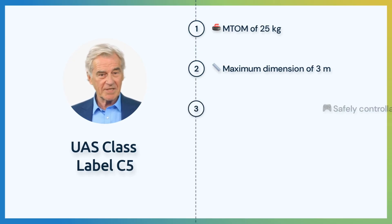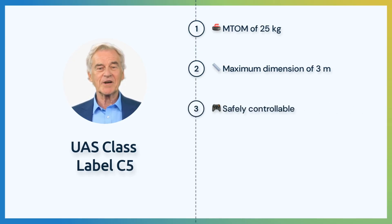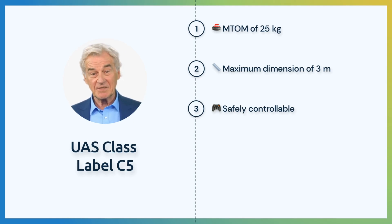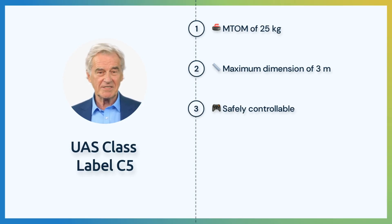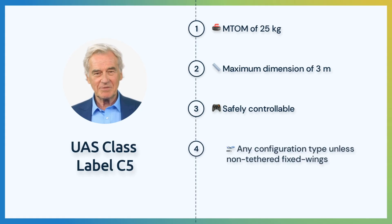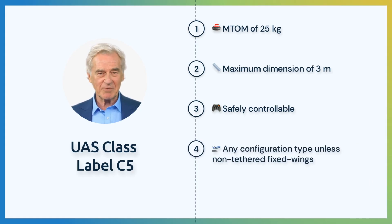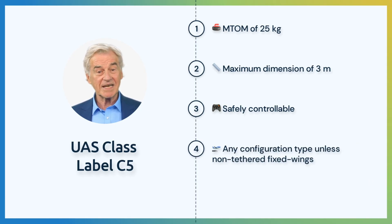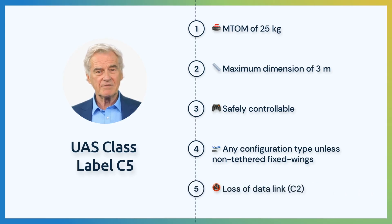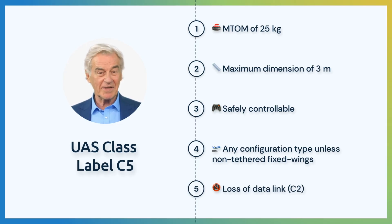It is important that the UAS is safely controllable regarding stability, maneuverability, and data link performance by a remote pilot following the manufacturer's instructions — the easier, the better. Any configuration type can fall under the C-5 class label unless non-tethered fixed wings. In case of a loss of a data link, the UA shall recover the data link or terminate the flight in order to reduce risk to air and ground third parties.